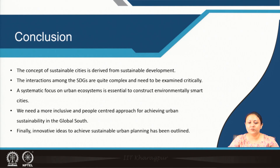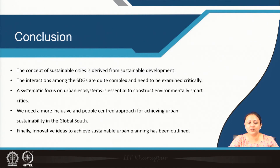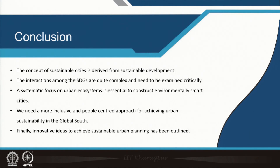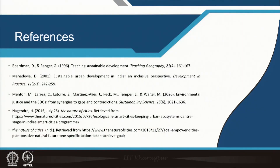Let us briefly summarize what we learned in today's class. Firstly, the concept of sustainable cities is derived from the sustainable development definition contained in the Brundtland Commission report, 'Our Common Future.' The interactions among the sustainable development goals are quite complex and need to be examined critically. A systematic focus on urban ecosystems is essential to construct environmentally smart cities. We need a more inclusive and people-centered approach for achieving urban sustainability in the global south. Finally, innovative ideas to achieve sustainable urban planning have been outlined. Thank you for joining and I will see you again in the next class, which is about rethinking environmental justice in the cities.